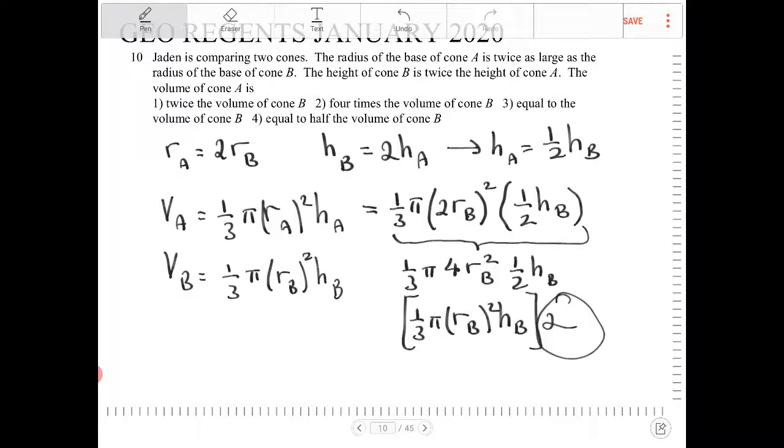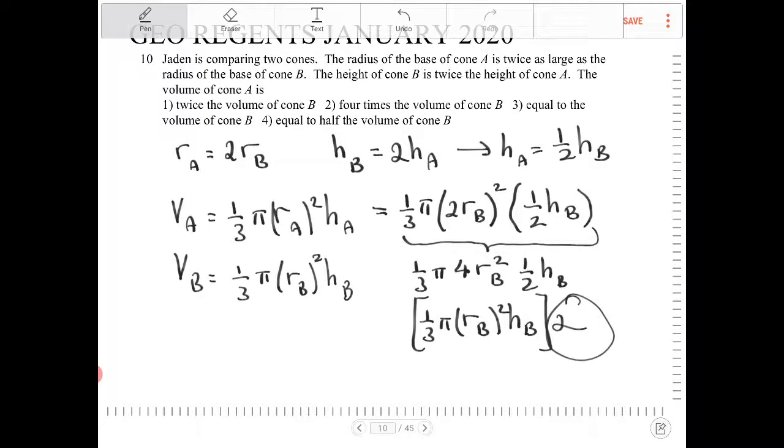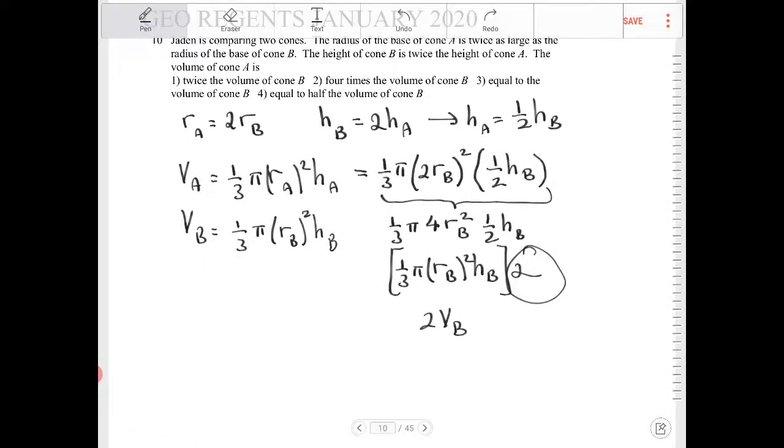So volume of A is going to equal 2 times the volume of cone B. Again, this thing that I have in brackets right now, this is the volume of cone B. So I'm just going to replace that with V sub B. So A is equal to 2 times VB.